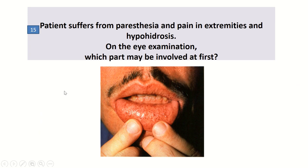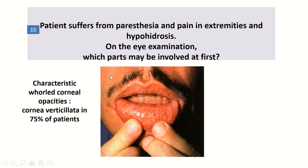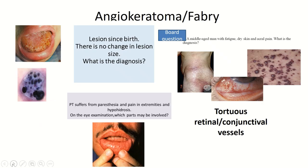A syndromic form of angiokeratoma is Fabry disease, where the patient manifests with paresthesia and pain in extremities and hypohidrosis. Any part of the eye — cornea, lens, and retina — can be involved in Fabry disease. A characteristic and early finding of eye involvement is whorled corneal opacities, found in 75% of patients.